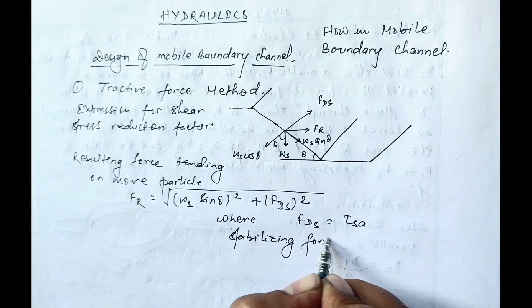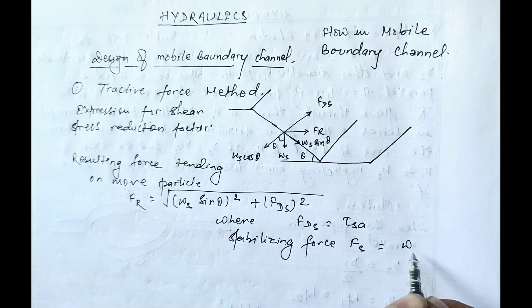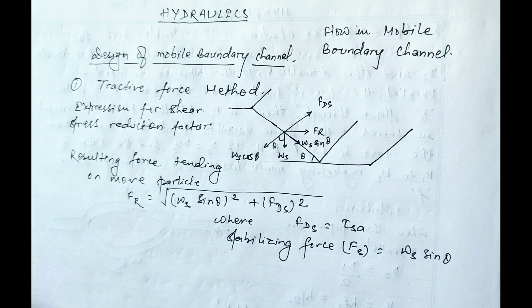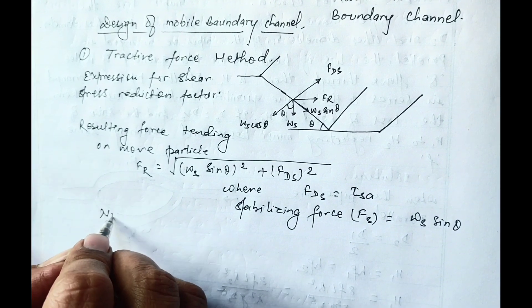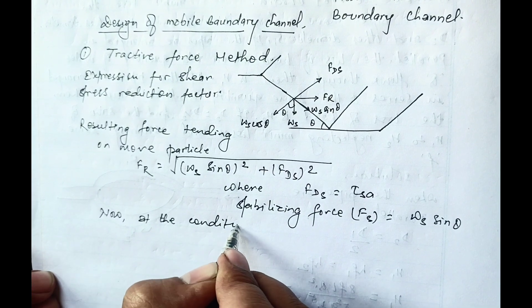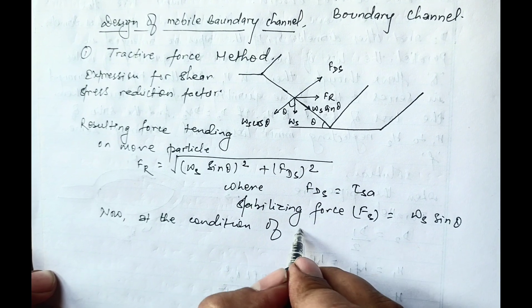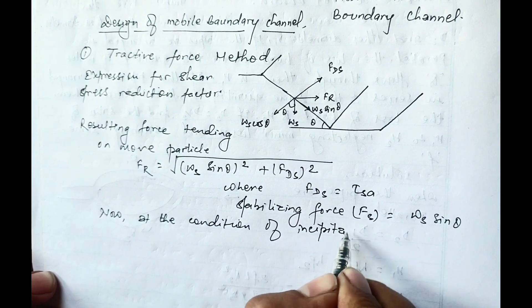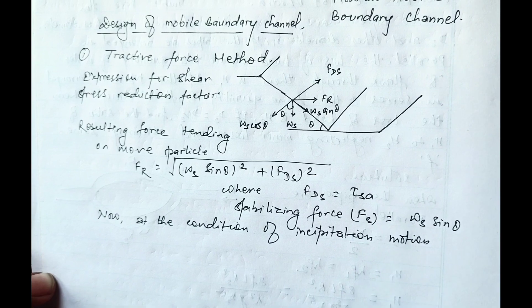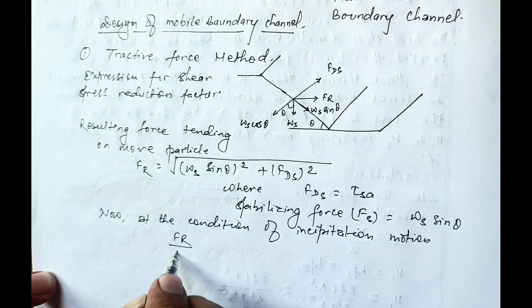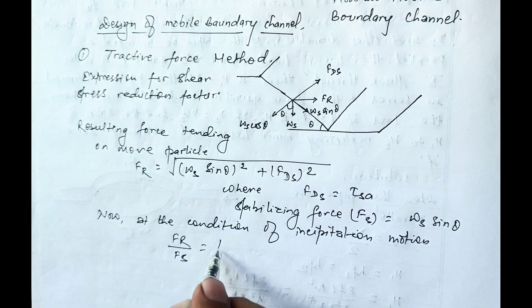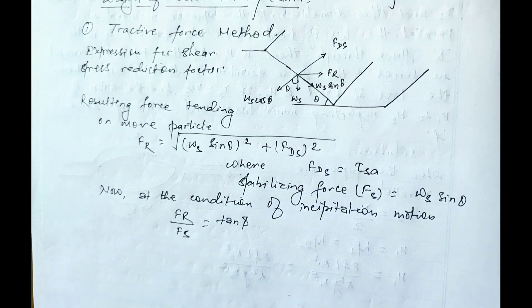The stabilizing force FS equals WS cosine theta. At the condition of incipitation motion, FR by FS equals tan phi, where phi is the angle of repose.